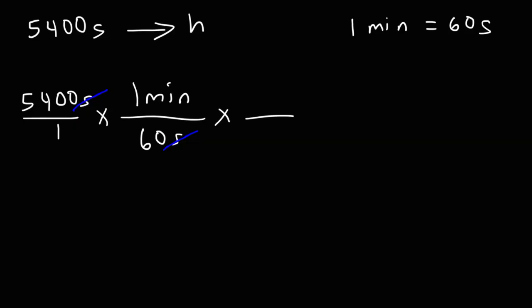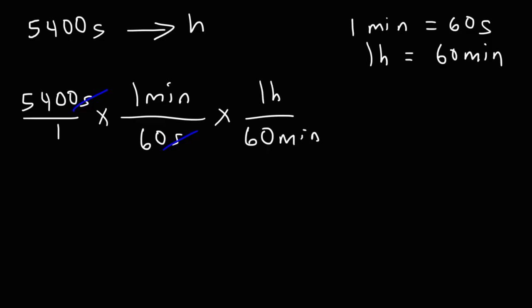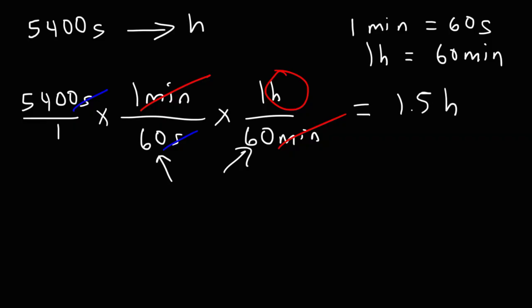Now we convert from minutes to hours. We know that 1 hour is equal to 60 minutes. Since we have the unit minutes on top, we put 60 minutes on the bottom and 1 hour on top, so the unit minutes cancel, giving us the unit hours. The two numbers on the bottom multiply: 60 times 60 is 3,600. So it's 5,400 divided by 3,600, which is 1.5. So 5,400 seconds equals 1.5 hours.